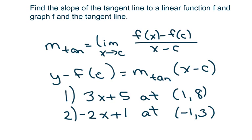We're going to find the slope of the tangent line to a linear function and graph f and the tangent line. The previous two videos I did were finding the slope of the tangent line to quadratic functions and the other one was to cubic functions. The linear function is actually very easy, but I find students get confused because what you're going to find is that the tangent line and the linear function are exactly the same.